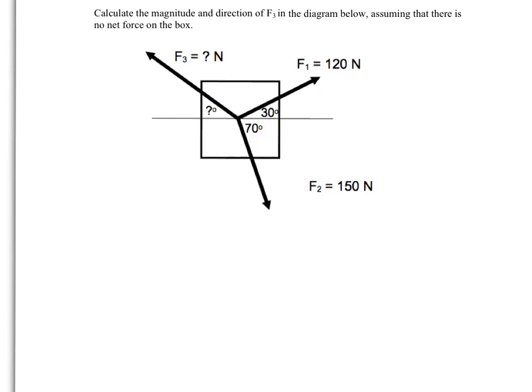So the only real way to do this is to break them down into their components. In other words, F1 is pulling at this angle of 30 degrees. So what I need to figure out is how much is it pulling in the x direction and how much is it pulling in the y direction. This is 120 and this is 30 degrees. What is the x component and what is the y component?